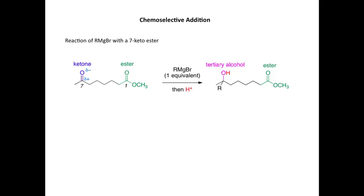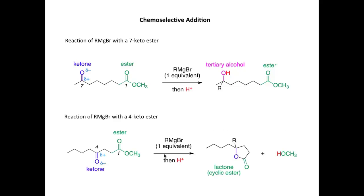Let's compare that reaction with the reaction of a Grignard with a 4-keto ester. Again, we have a molecule containing an ester functional group and a ketone, but now these functional groups are only separated by two carbons. Similarly, if we react with one equivalent of a Grignard followed by acid, we get two products formed. We don't get the same situation as before. With a 4-keto ester, we get a lactone formed together with methanol. It's interesting to see why, when we move the ester and the ketone groups closer together, we get different reaction products.